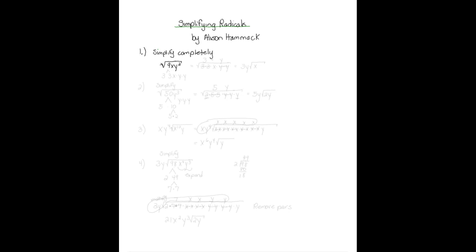What we want to do is make a factor tree of our nine here. So nine is three times three, and then x will be just x, and y squared will be y times y. So we want to rewrite this underneath the radical symbol over top of it.